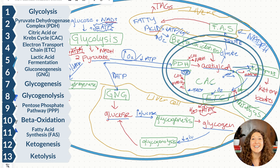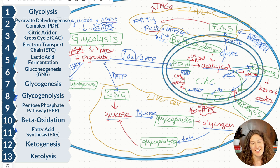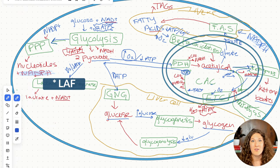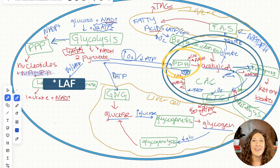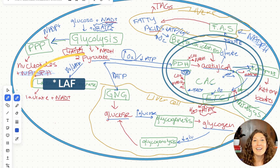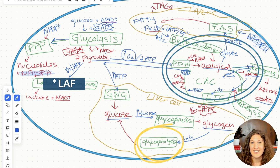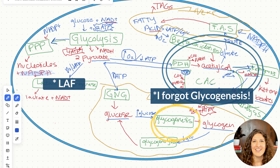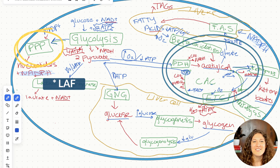We did it! Here are all 13 metabolic pathways on one page to review the precursors and products. Just to review, we went through the following metabolic reactions: glycolysis, the pyruvate dehydrogenase complex reaction, the citric acid or Krebs cycle, the electron transport chain, lactic acid fermentation, gluconeogenesis, glycogenesis, glycogenolysis, and the pentose phosphate pathway.